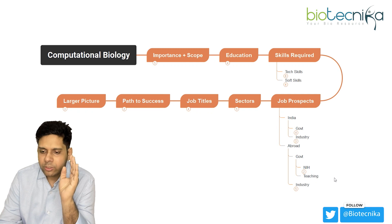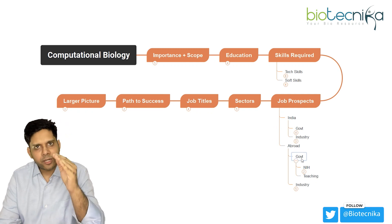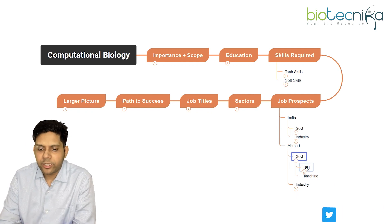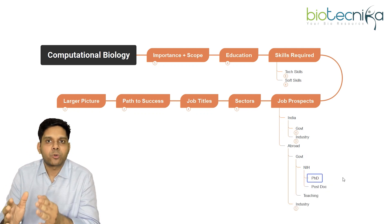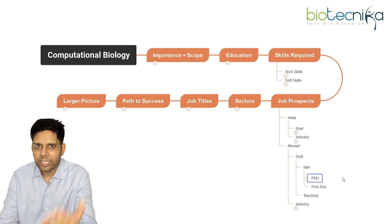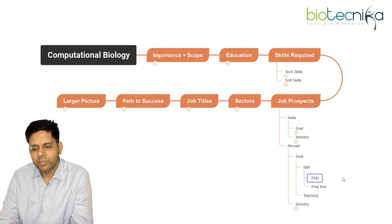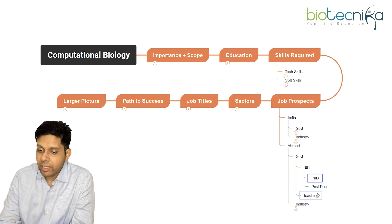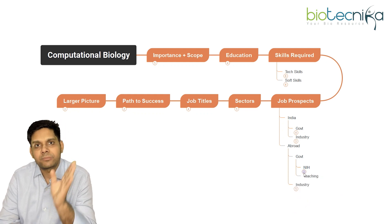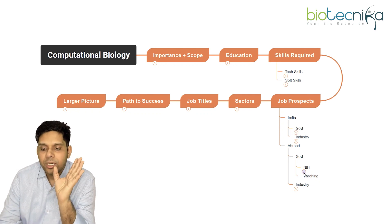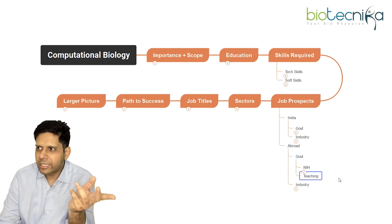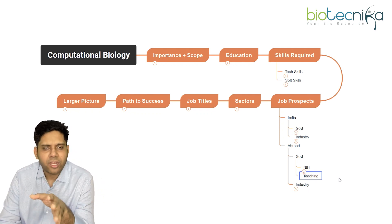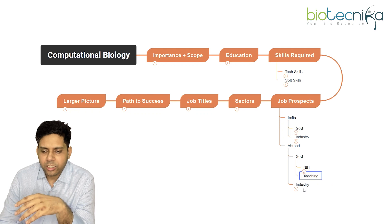Coming to abroad, we can again divide into government and industry. Under government, you have the NIH — the National Institute of Health in the US — where PhD and postdoc research positions are available. Multiple other positions are available in the US as well. As I have always said, the US is the Mecca of Biosciences. Teaching jobs — professor and assistant professor positions — are also available in the US and abroad.